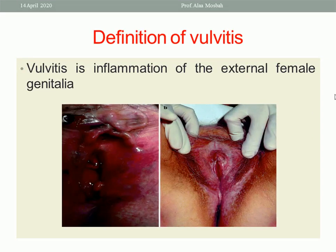Vulvitis is inflammation of the external female genitalia. Inflammation of the external female genitalia in the vulvar region and the perineal region is called vulvitis. It presents with redness, inflammation, discharges, and skin lesions.